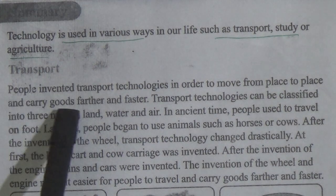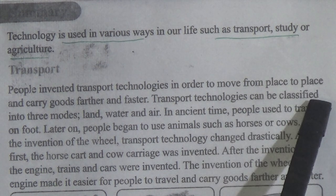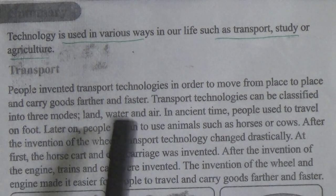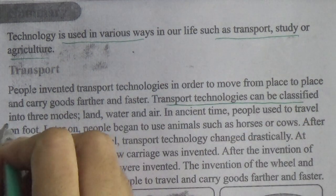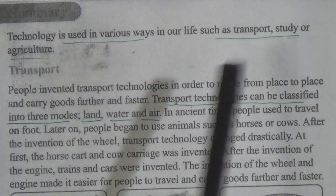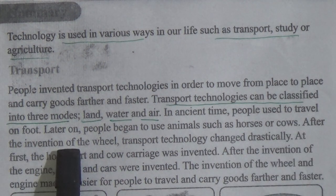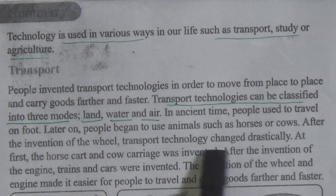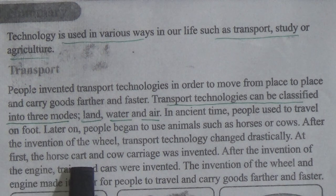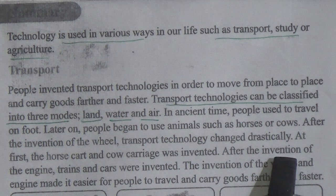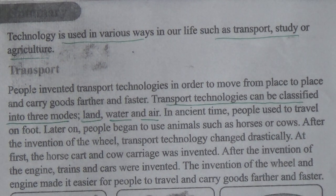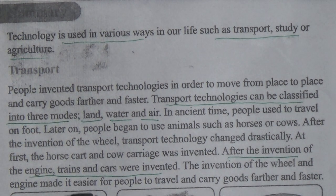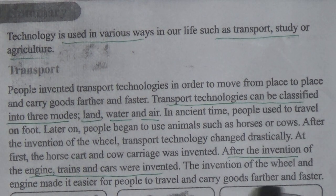Transport: people invented transport technologies in order to move from place to place and carry goods further and faster. Transport technologies can be classified into three modes: land, water and air. In ancient times, people used to travel on foot. Later on, people began to use animals such as horses or cows. After the invention of the wheel and engine, it became easier for people to travel and carry goods further and faster.